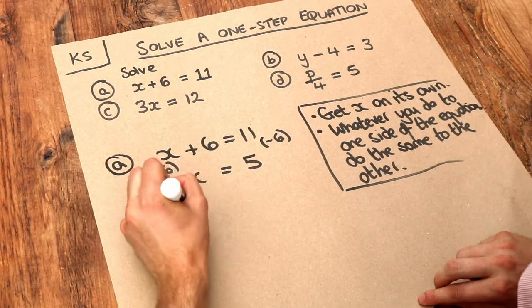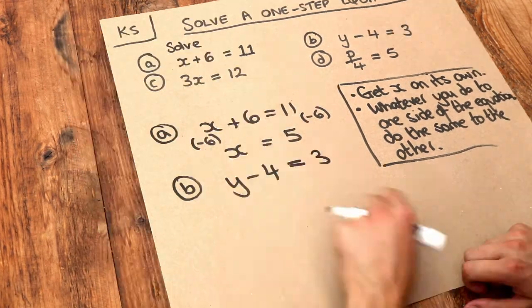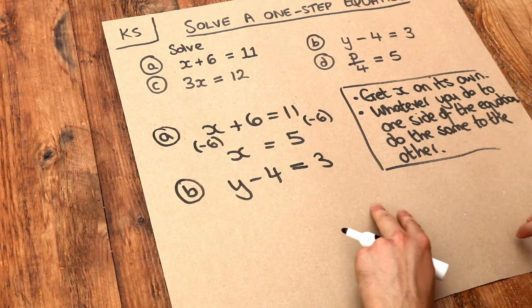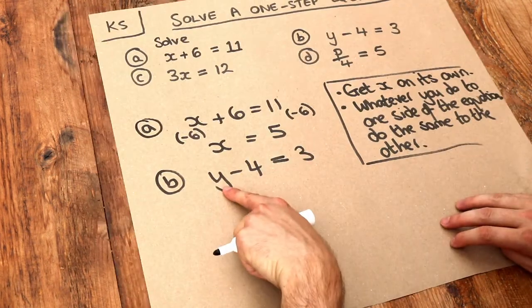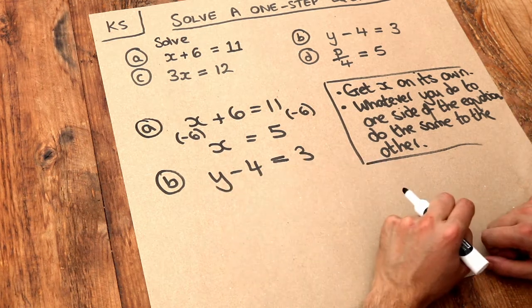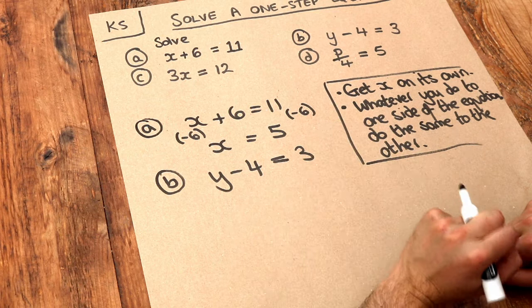Part B. We've got y minus 4 equals 3. You might be able to do this in your head. What minus 4 equals 3? Well, it's 7. But let's do it with working. We want to get y on its own to solve the equation. We don't want that minus 4 there, so we do the opposite to get rid of it.